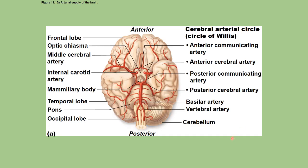The brain has quite an extensive blood supply because it is very fragile tissue and critically important. It needs a very good supply, and there are often multiple ways of supplying blood to the various areas of the brain — essentially providing backup. So if there were a blockage at one point, there would still be other ways of getting blood to the various regions.